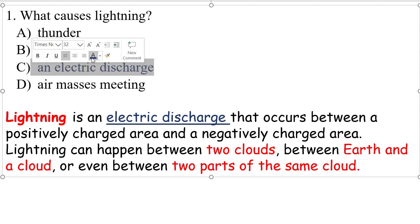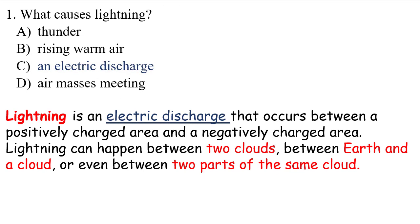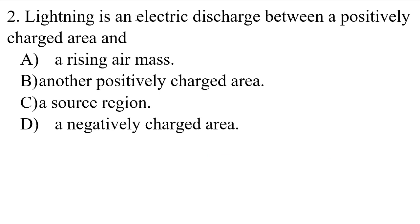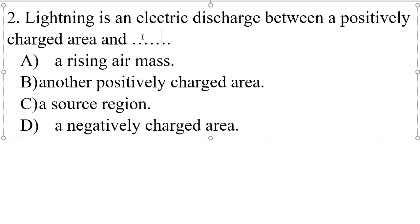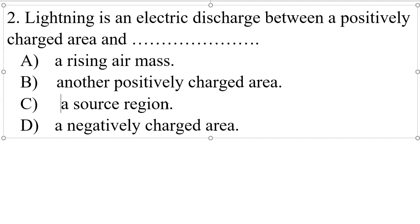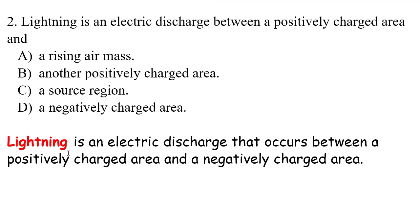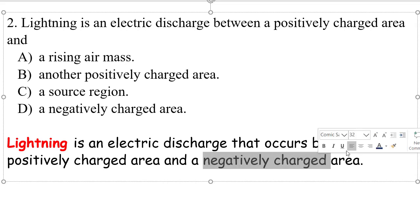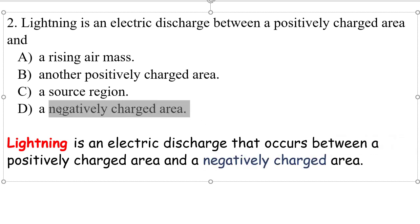Question 2: Lightning is an electrical discharge between a positively charged area and what? The options are: a rising air mass, another positive charge area, or a negatively charged area. As we discussed, lightning occurs between a positively charged area and a negatively charged area. The answer is D.